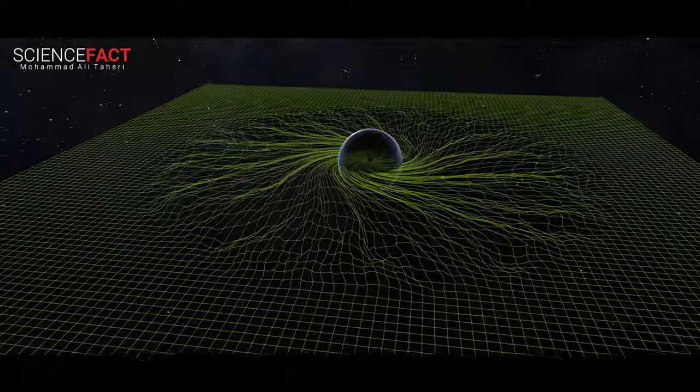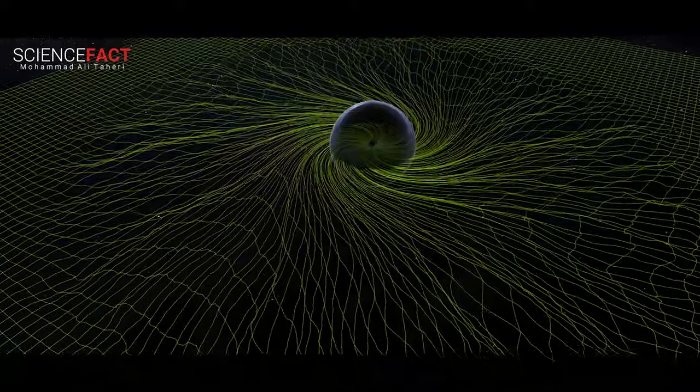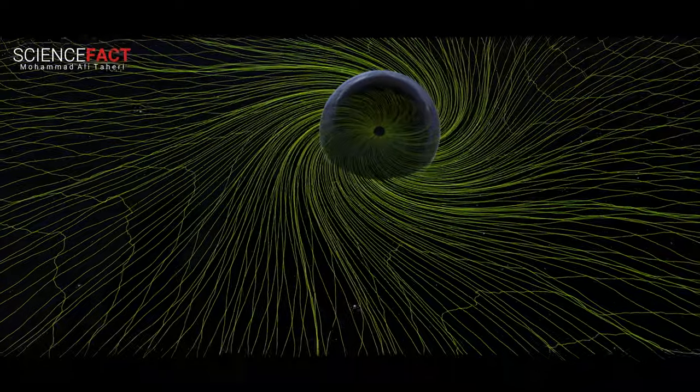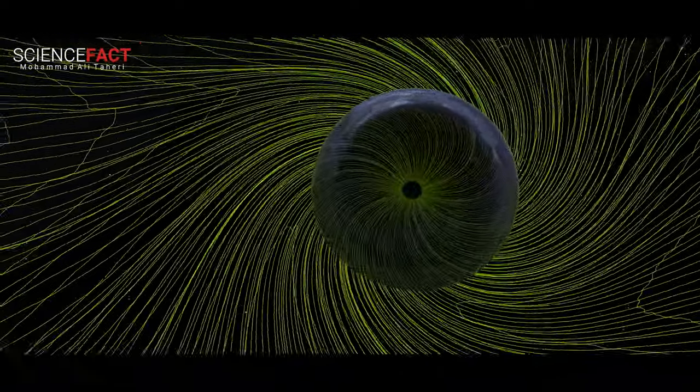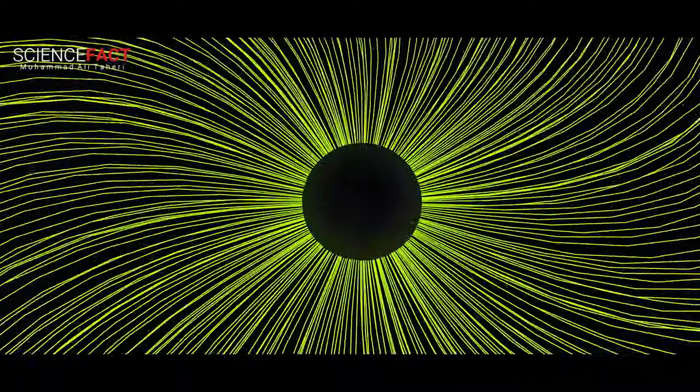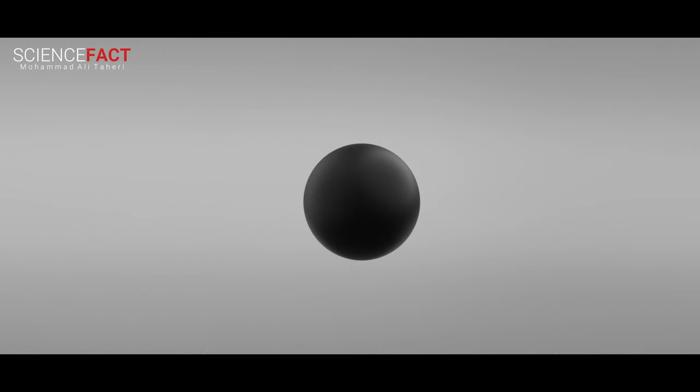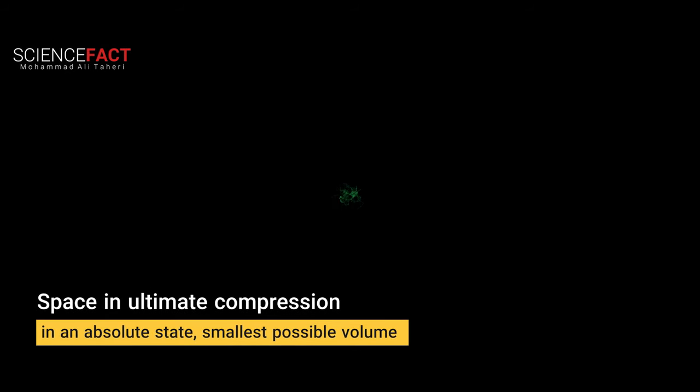Space is only relatively shrunk inside an intracosmic black hole. In other words, it has not yet reached its most critical and crumpled state. Comparatively, space inside a cosmic black hole is in an absolute state, or at the smallest possible volume. Space is in its most compressed and contracted state, which is, in effect, approaching, but never reaching zero.